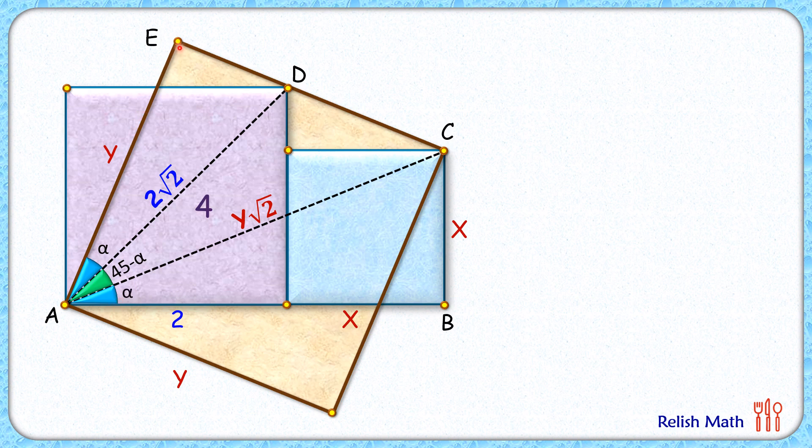If you look at triangle AED and triangle ABC, this green and pink triangle, we have α and α angles. Angle E is 90° and angle B is 90°. Thus by angle-angle similarity, these two triangles are similar. As the triangles are similar, the ratio of corresponding sides will be equal.